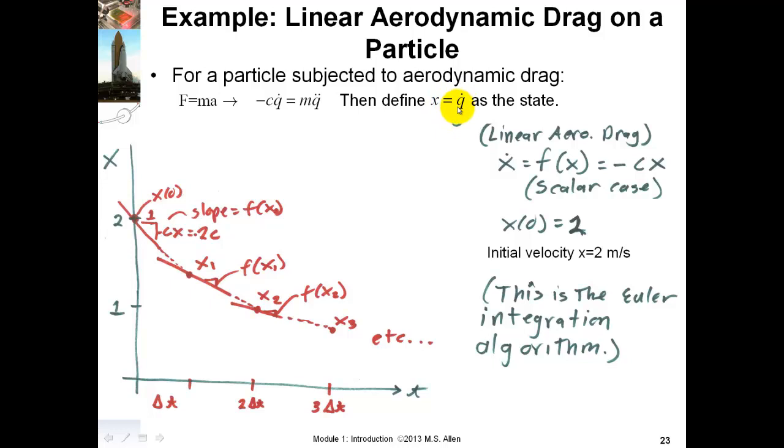And then if we let our state be the velocity, then this has the form x dot equals F of x. And we can solve this. The basic idea behind the numerical integration is that if we know, say, that the initial velocity is 2, then at that instant, the acceleration will be negative C times 2. So we'll have some deceleration of the particle. We just project forward with a constant deceleration until we get to some instant later in time.